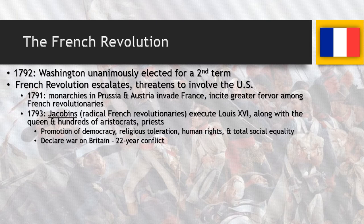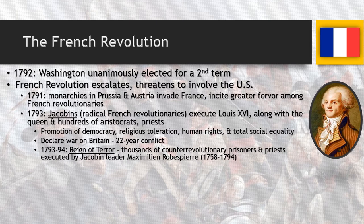The Jacobins declare war on Britain, leading to a 22-year-long conflict between England and France — longtime mortal enemies since 1066. From 1793 to 1794, the Reign of Terror represents the height of Jacobin violence, with thousands of counter-revolutionary prisoners and priests executed en masse. The guillotine gets its most exercise during this period. The Jacobins are led by Maximilien Robespierre.